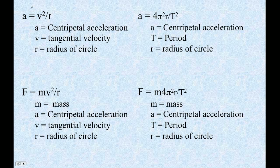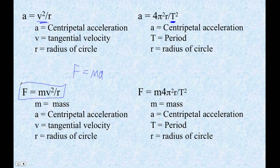So a lot of formulas. This is our centripetal acceleration with velocity, and here's our centripetal acceleration with period. So it just depends on what they give you. These are centripetal force, and all I've done is I've just set F equals ma. But some people like to have a separate formula, so write these down if you want a separate formula for centripetal force.